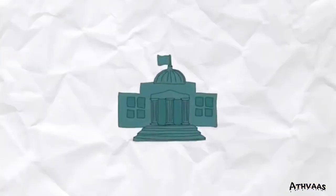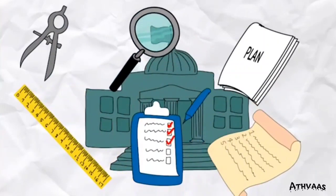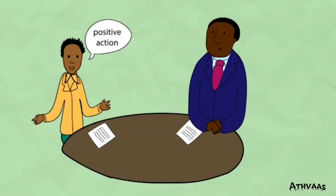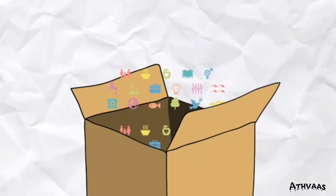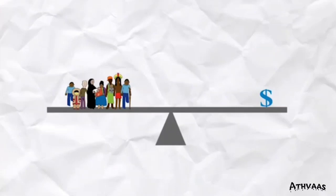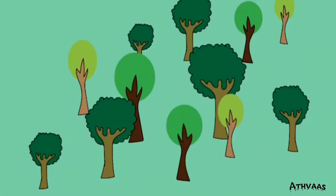Now that you know there are 17 different sustainable development goals that help us in eradicating and fighting climate change and global warming, different governments need to have a plan of action and involve civil society groups for positive and collective measures to implement these goals. More importantly, every goal should be given equal preference.